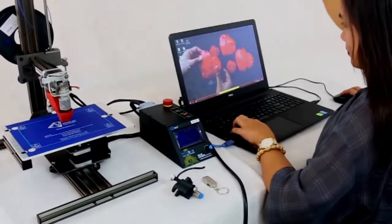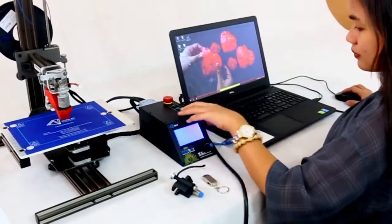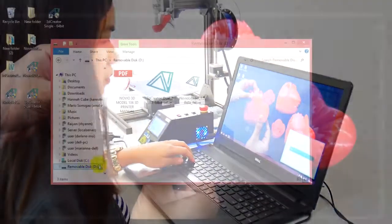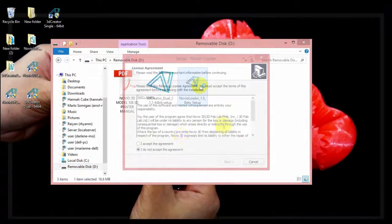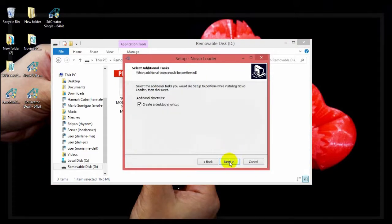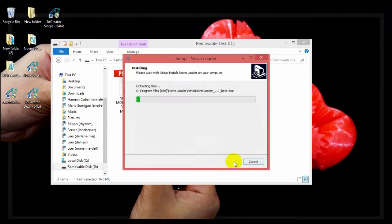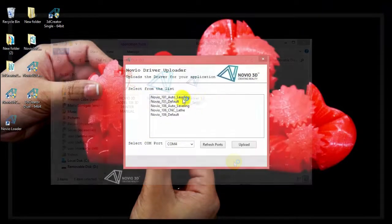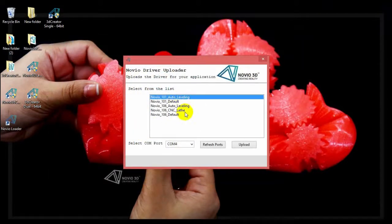First, turn on the PCB box. Open the Novio driver loader and select the printer version to be uploaded. Check the computer port of the PCB box before uploading.